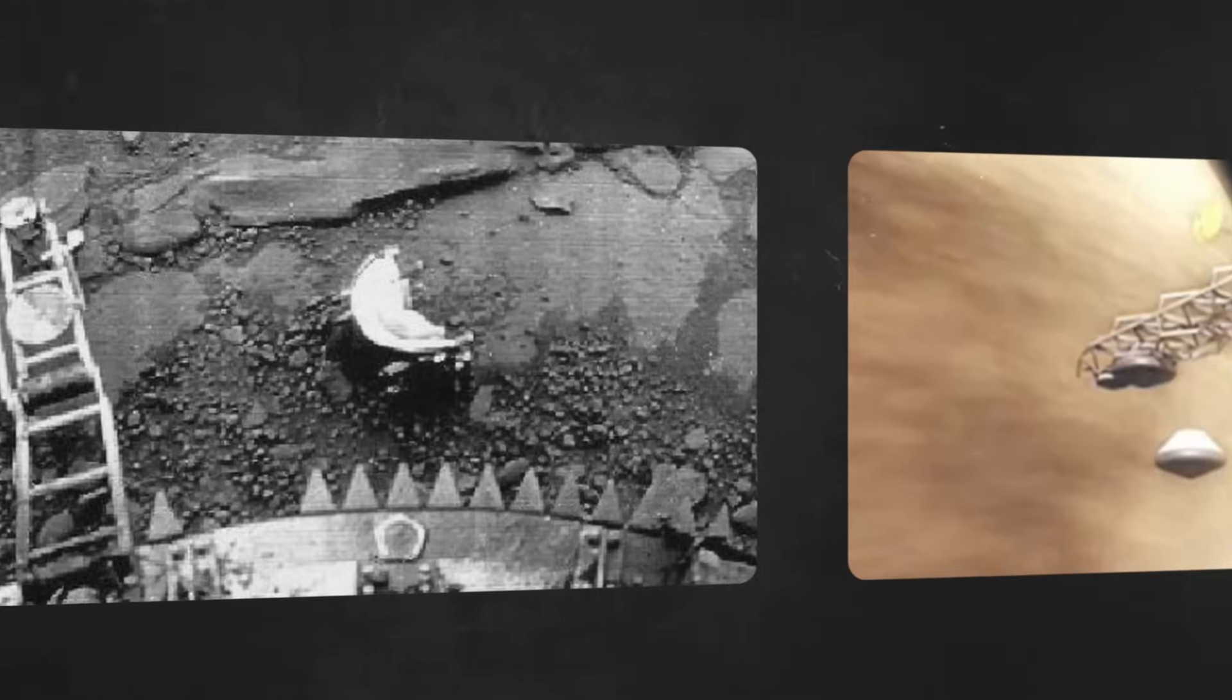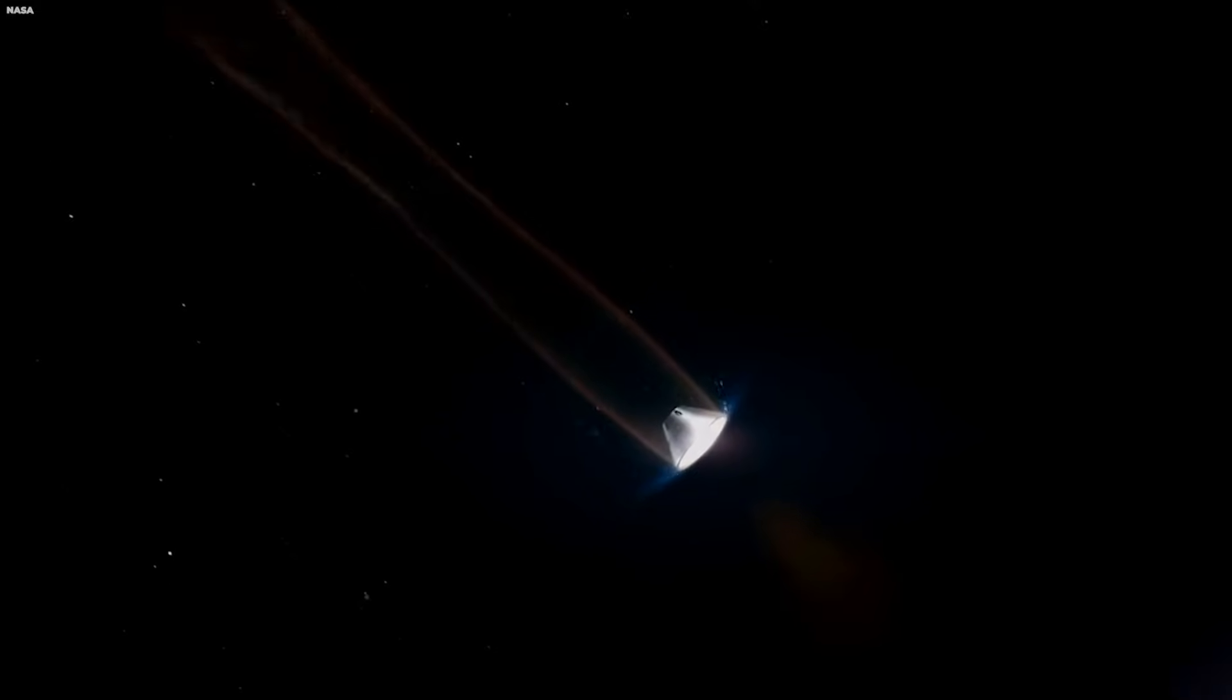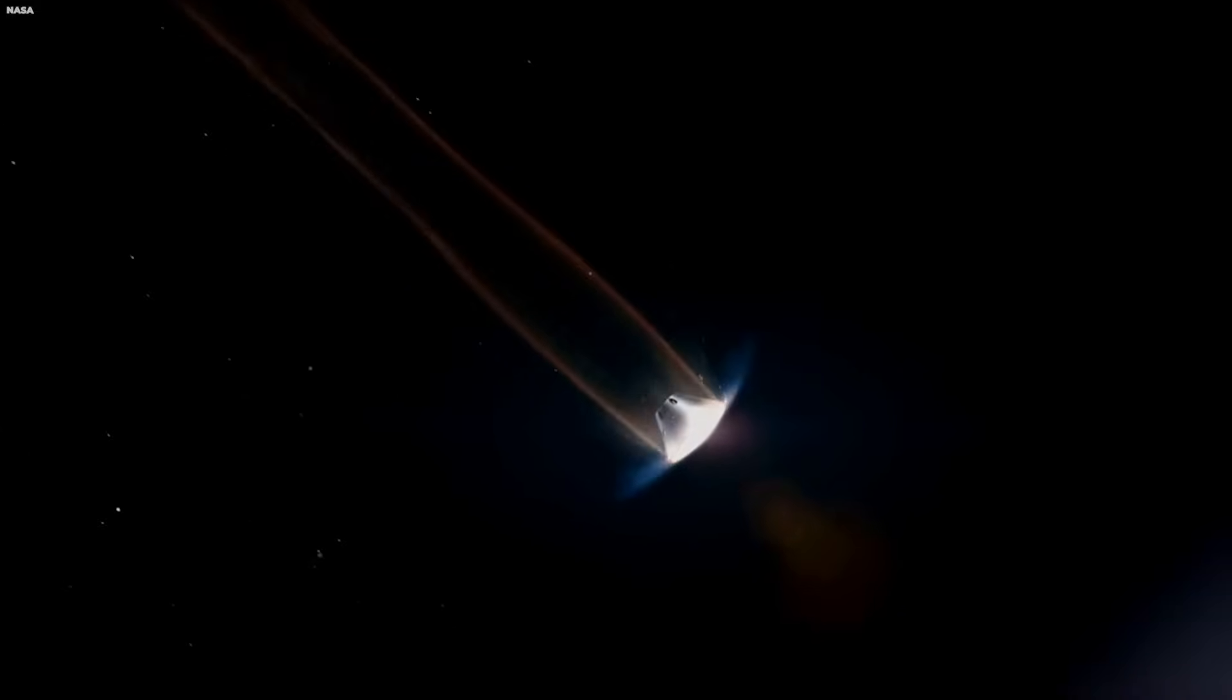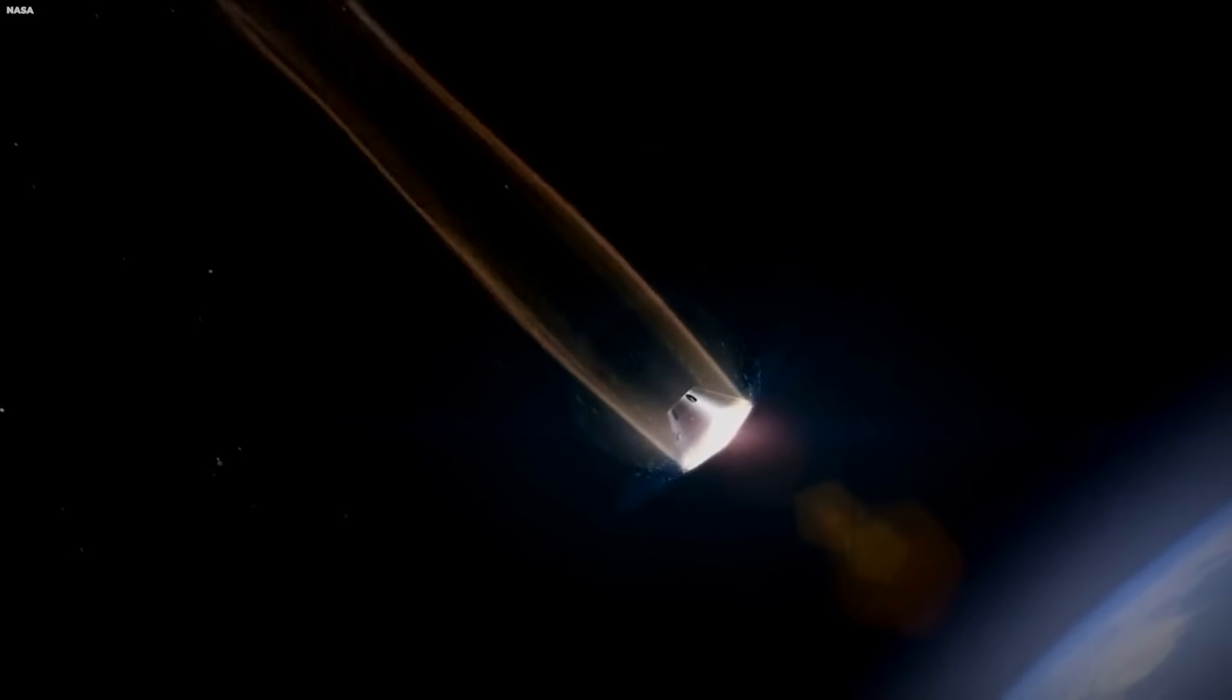Despite early Soviet investigation of Venus being fraught with failure, the Soviets eventually landed a spacecraft on Venus and took the first photographs from the surface of another planet. Their engineering feats were remarkable even by today's standards.